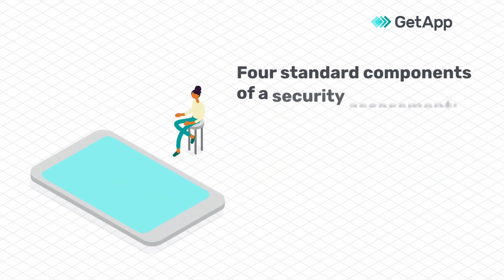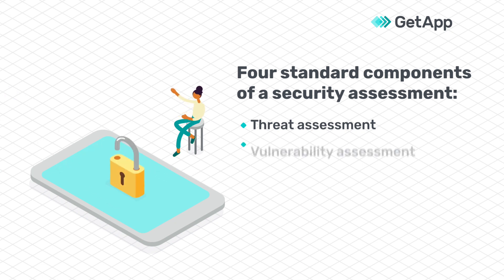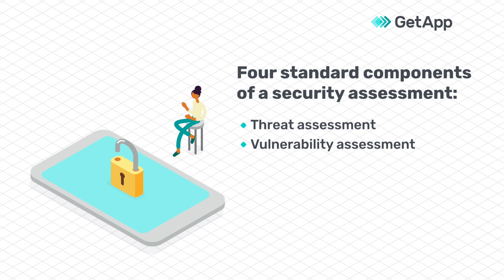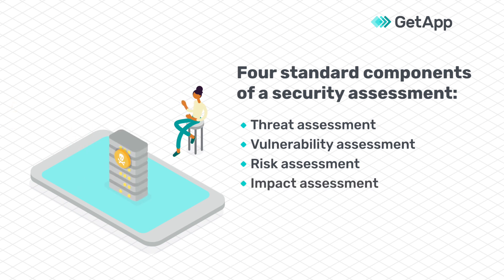Security assessments have four standard components. Threat assessment identifies and rates factors that could disrupt your business. Vulnerability assessment detects system weaknesses that have the potential to be targeted. Risk assessment measures the probability of a threat exploiting a vulnerability in your system. And impact assessment measures the damage to your business if a breach should occur.